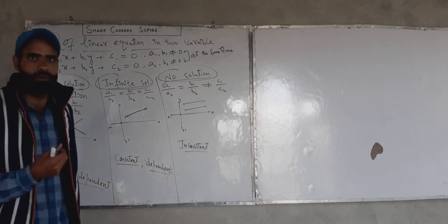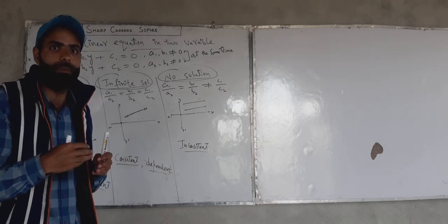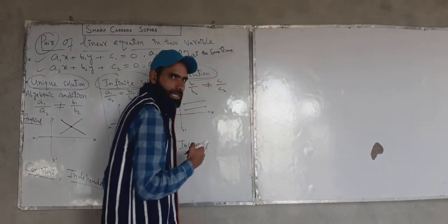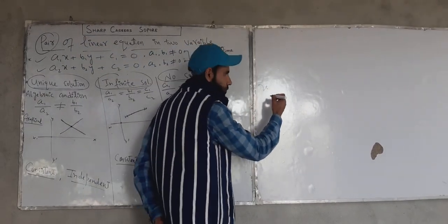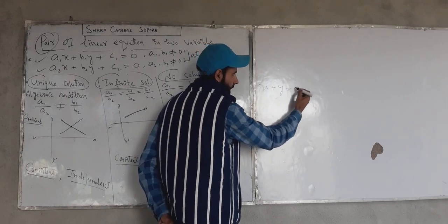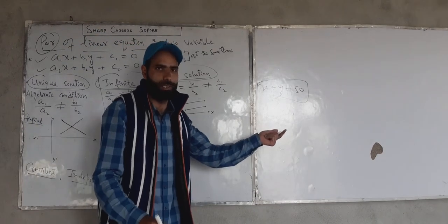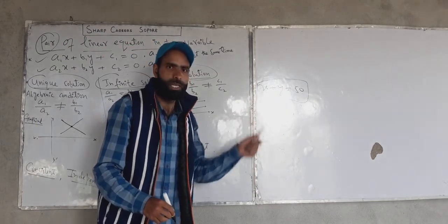For example, the sum of my age and my friend's age is 50 years. If my age is x and my friend's age is y, so x plus y is equal to 50. This is an equation in two variables, it's actually information. Equation is actually information.